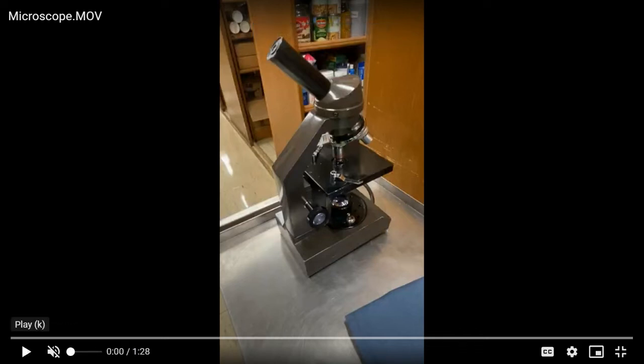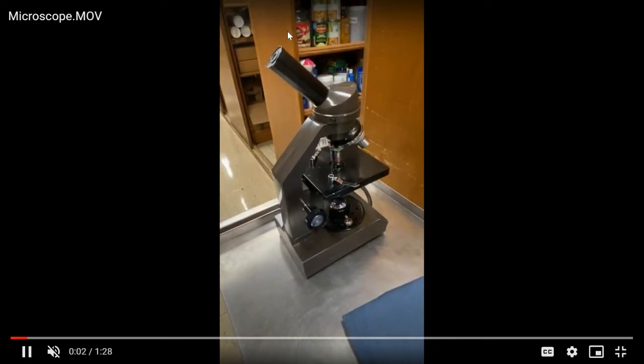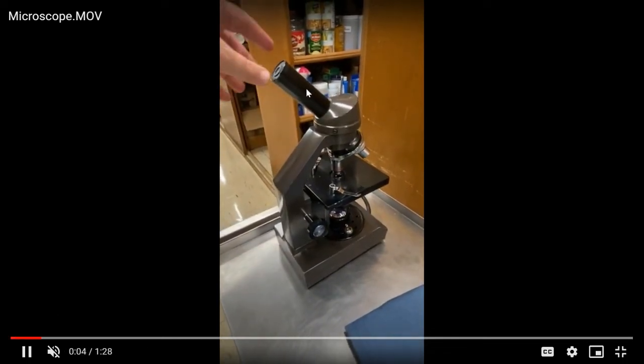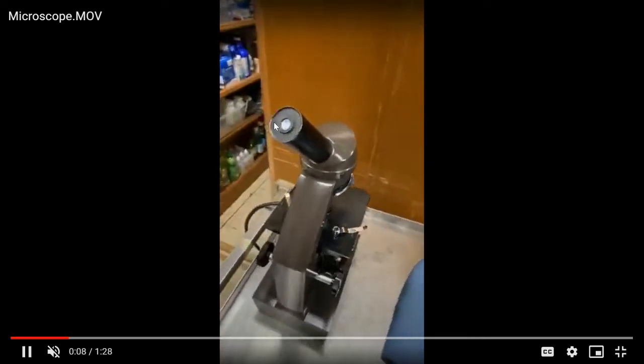Okay, here is the compound microscope we're going to be using for our lab this week. Up here at the top, this is the eyepiece. This is what you're going to look through. It has a magnification of 10x. You'll see that here on the lens.